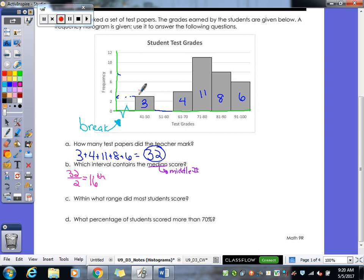So here are my first three test scores. And then this would be numbers four, five, six, and seven. So between here I've got seven total so far. So in here I'd have eight, nine, ten, eleven, twelve, thirteen, fourteen, fifteen, sixteen. So my sixteenth number is going to fall in that column right there. So the interval that contains our median is seventy-one to eighty.